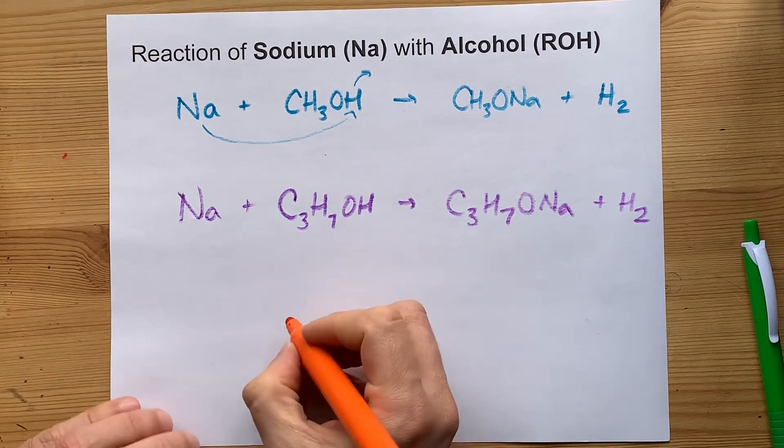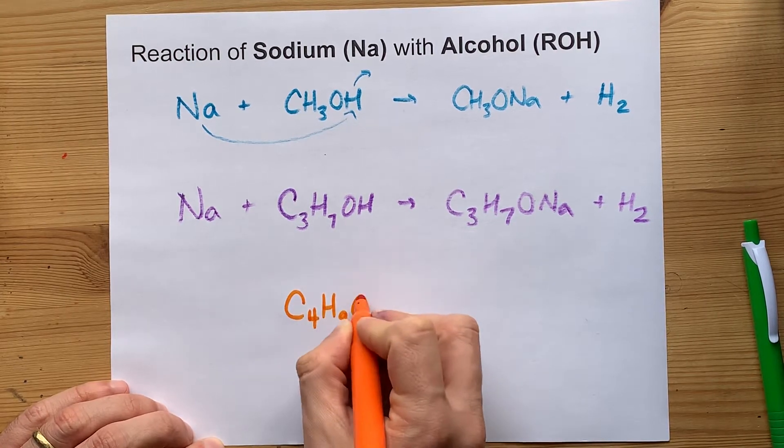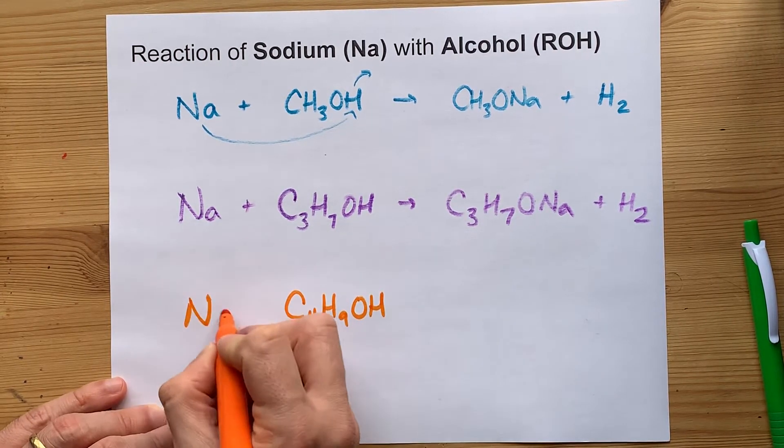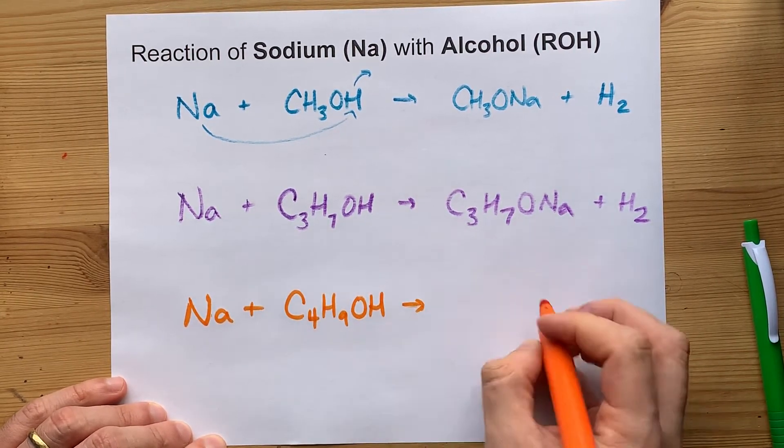Do you want one more example? We can do butanol if you'd like, C4H9OH. Add sodium to it. The sodium takes the place of the H on the alcohol.